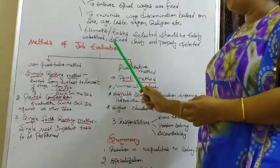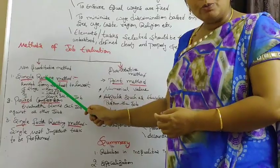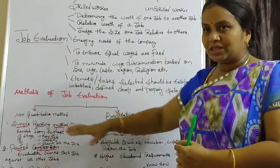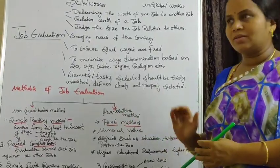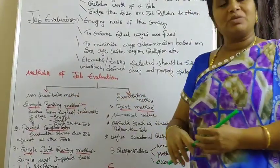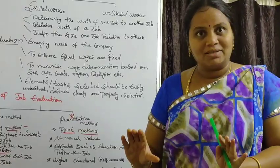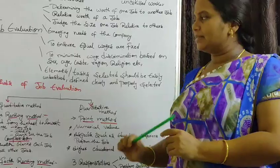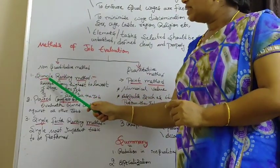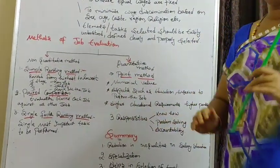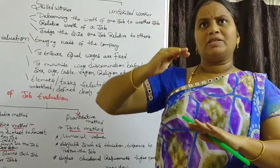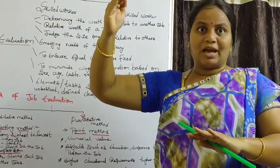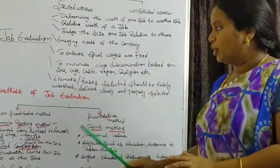Next, the methods of job evaluation. There are two methods: one is the non-quantitative method, another is the quantitative method. Non-quantitative means not in numbers; quantitative means only in numbers. The first non-quantitative method is the simple ranking method — they will rank jobs from highest priority to lowest, determining what type of salary to give from highest to lowest.